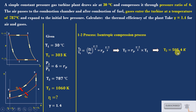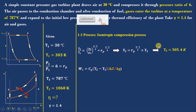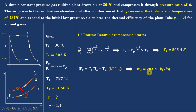T2 becomes 505.4 K, without considering isentropic efficiency of the compressor, meaning we take compressor efficiency as 100%. The compressor is a work-consuming device, so we find: Wc = Cp(T2 − T1). With Cp = 1.005 kJ/kg·K, the compressor work is Wc = 203.41 kJ/kg of air.